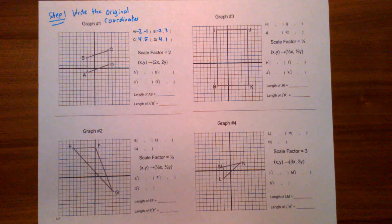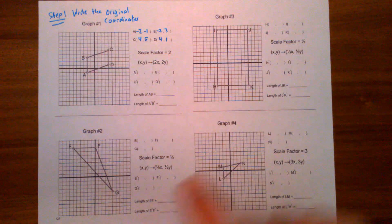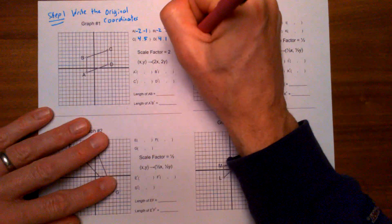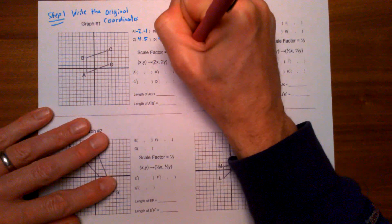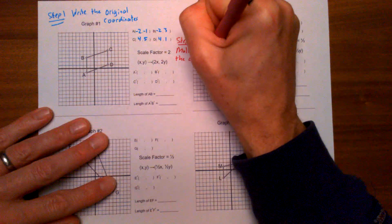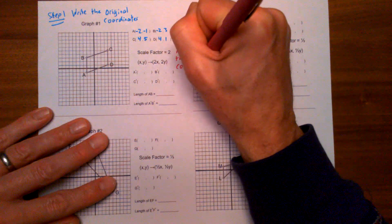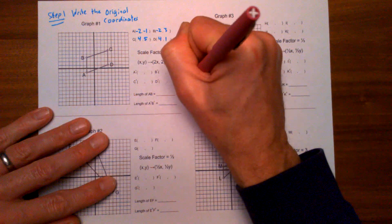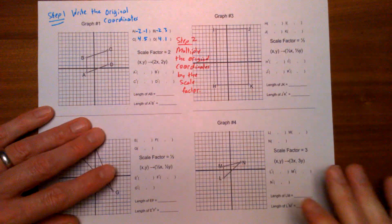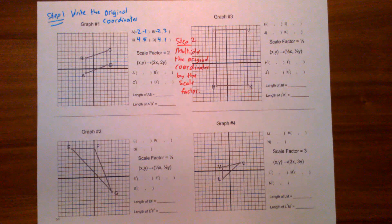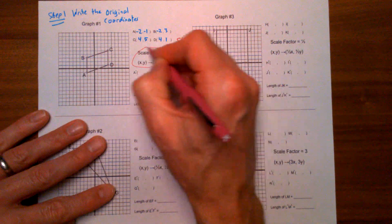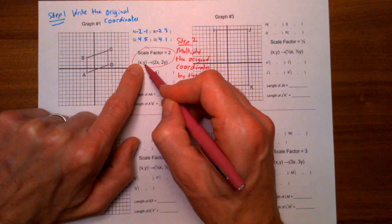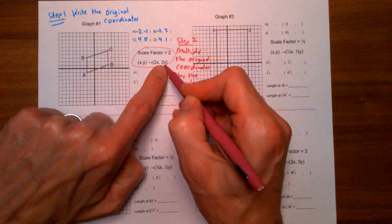Next, step two: multiply the original coordinates by the scale factor. The scale factor is two. If I'm writing this as a coordinate rule, that means any point (x, y) on the graph is going to have its coordinates doubled — we'll multiply the x-coordinate by two and the y-coordinate by two.